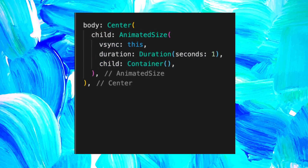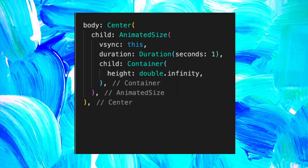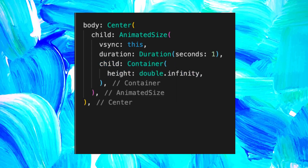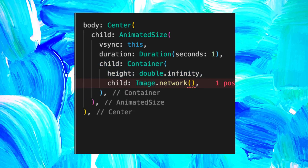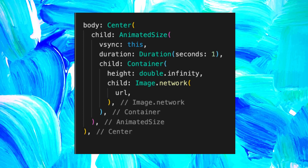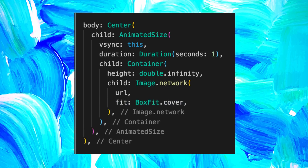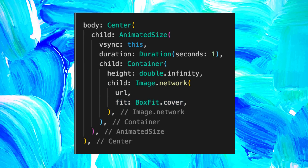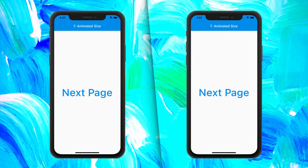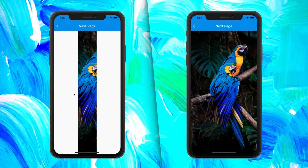We can add a container inside the child. The container will need to have a height of double.infinity, which means take all the place it can. The child inside will have an image.network with the URL and an argument fit that will have the BoxFit.cover to make sure that the image takes all the remaining place. And with all this, you will have your animated size.